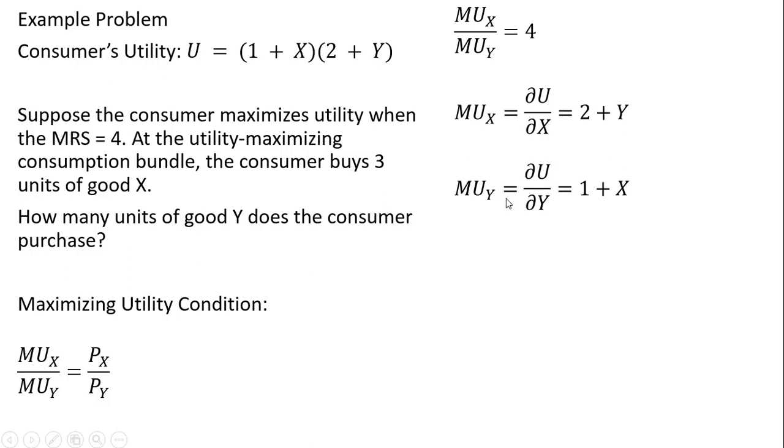And then the marginal utility of good Y, likewise, is a partial derivative. The partial derivative of the utility function with respect to good Y. So to get 1 plus X, the way to think about this is that the derivative here of Y is just 1, and this 1 is being multiplied by what's in the parentheses over here on the left, this 1 plus X.